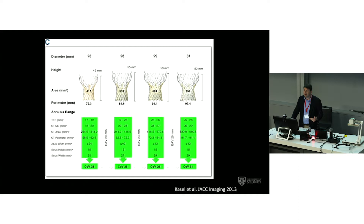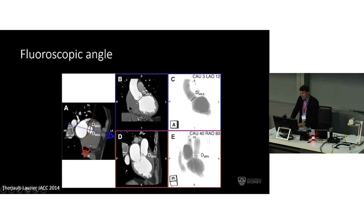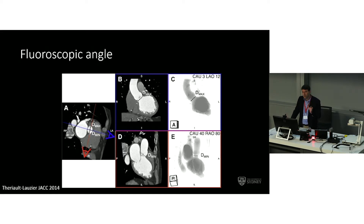Once we've established a diameter, we can use standard sizing charts to determine what the best valve will be. But we're not just looking at diameters and measurements — there are many other factors to consider. We can assign points to the bottom of the virtual annulus or the hinge points of the valve, and use those to guide ideal fluoroscopy positioning during the procedure. It doesn't work 100% due to differences in patient positioning between CT and the table, but it's quite useful for guiding starting cranial and caudal angles.